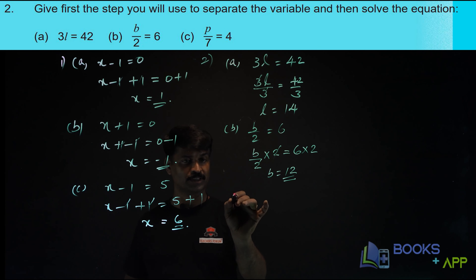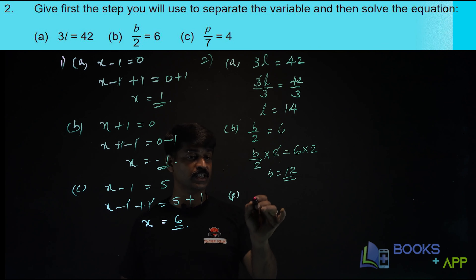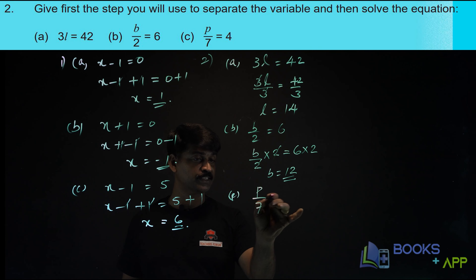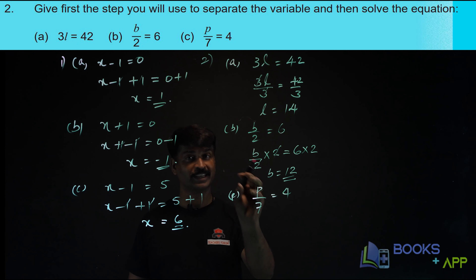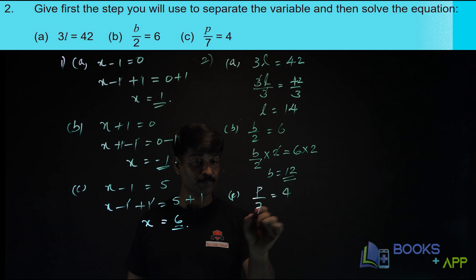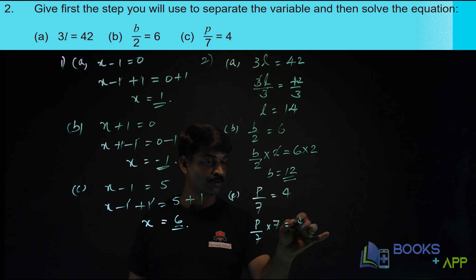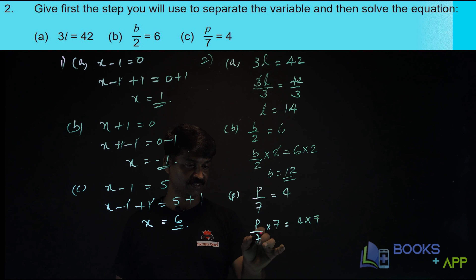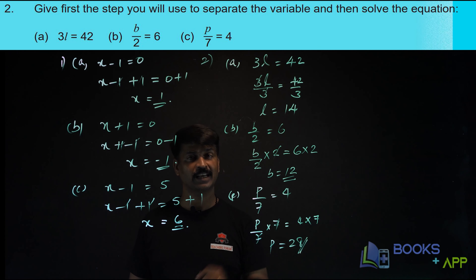Now let us solve one more — the third one: P by 7 is equal to 4. What we have to do? We have to remove this 7 from here, then you will be getting the value of P. Since P is divided by 7, you should multiply by 7 on both sides. So 7 and 7 get cancelled. P is equal to 4 times 7, which is 28. I think it is clear.